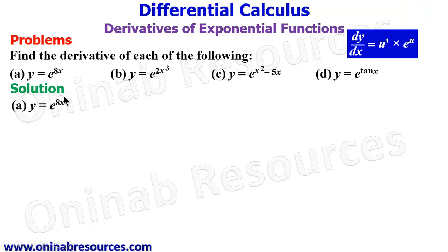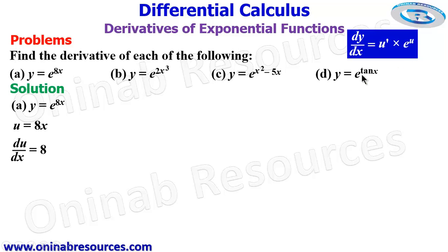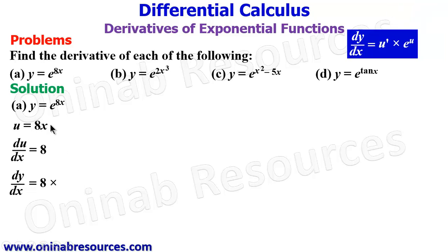Where u prime is du/dx. What do we use as our u? It is the second function, that is 8x, which will be used as our u. So we say u equals 8x, then differentiate with respect to x, which is the same as u prime. The derivative of 8x is equal to 8. We then substitute so that dy/dx will be u prime, which is 8, times e raised to power u.